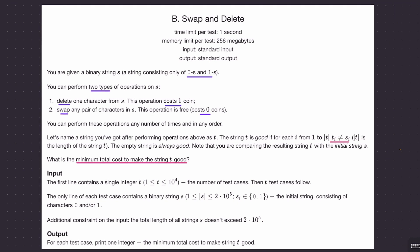The first question is called Swap and Delete. I hope you have read it, but I will quickly summarize. We are given a binary string — only characters 0 and 1. We can perform two operations: either move around characters (swap them), or delete some characters.